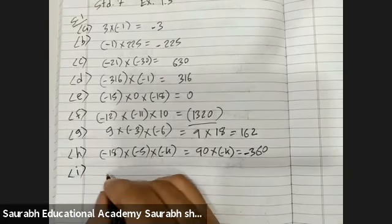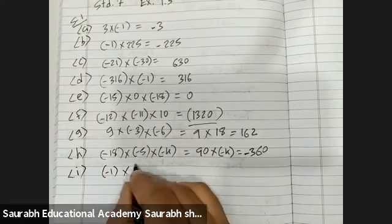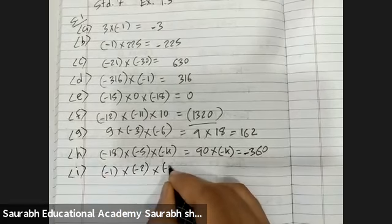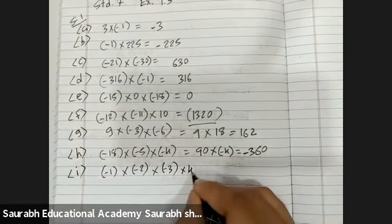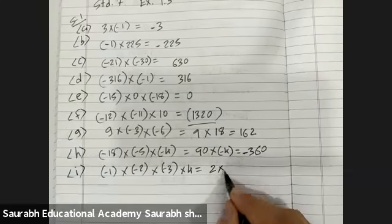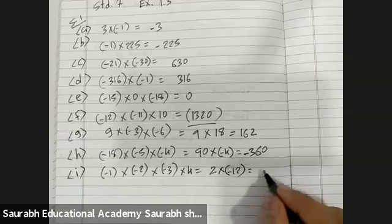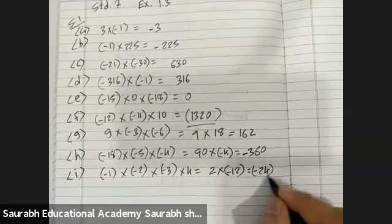I: minus 1 into minus 2 into minus 3 and 4. Now, 2 ones are 2 — minus minus is plus. 4 threes are 12. Then 12 twos are 24. But since one negative remains, the answer is minus 24.